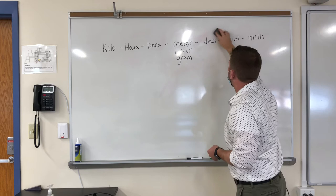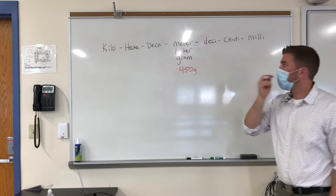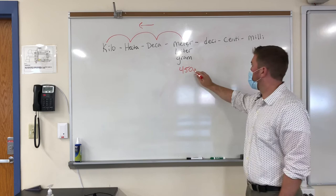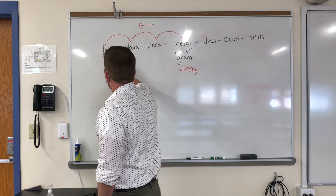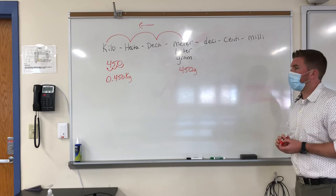Let's try going further than one spot. If I start with 450 grams and I want to go all the way to kilogram, I start at the standard unit and go one, two, three places to the left. So when I move that decimal point — which is right at the end — three places to the left, I have 0.450 kilograms. So 450 grams is 0.450 kilograms.